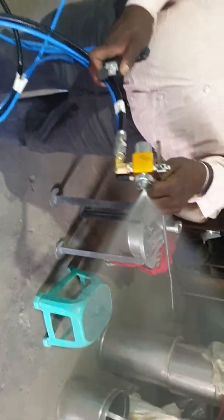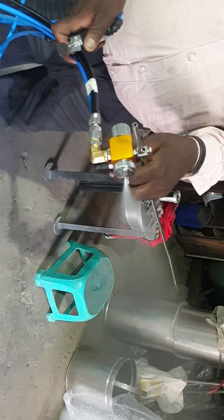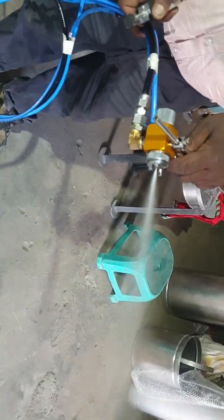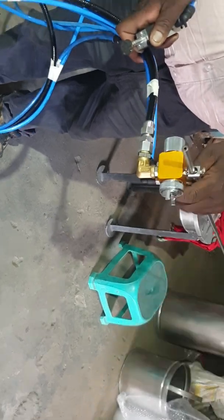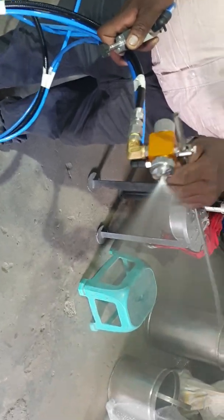The spray gun is working. Through that pattern control valve, one can increase or decrease the pattern size. This is the full pattern.